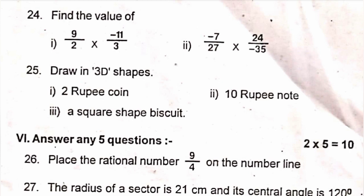25, draw in 3D shapes. First one, 2 rupee coin. Then second, 10 rupee note. Then third, a square shape biscuit.